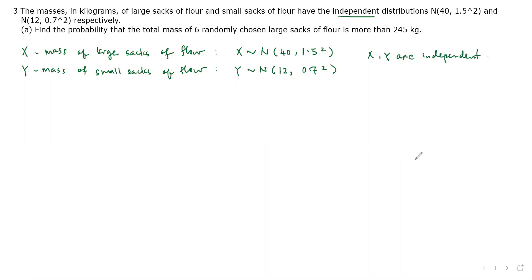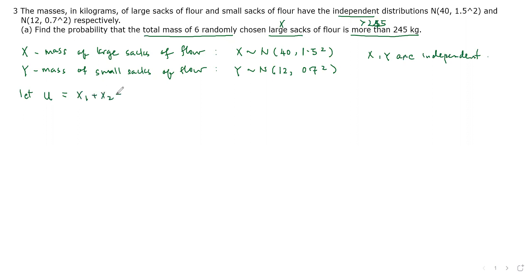For part A, we need to find the probability that the total mass of six randomly chosen large sacks of flour is more than 245 kilograms. We are looking at X, so we denote the random variable U as the sum of six of these X: X₁ + X₂ + ... + X₆. You cannot use U = 6X because the variance will be wrong.